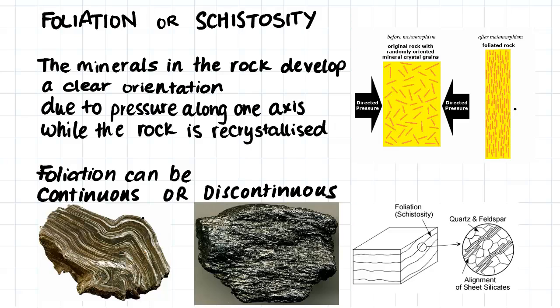Foliation can either be continuous or discontinuous, as we can see in these images here. Here we have continuous foliation, which does not stop, whereas here we can tell that there is a general direction of foliation on the rock, however they are not in continuous lines.